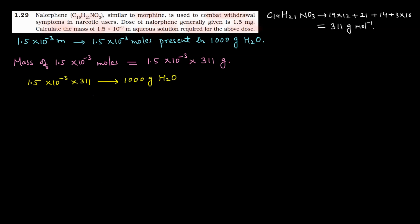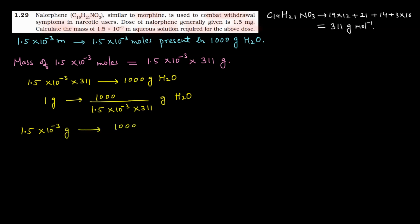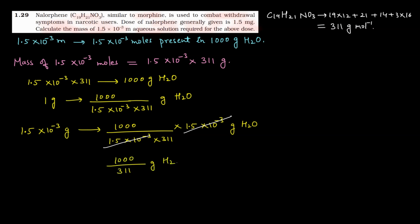So this mass — 1.5 × 10⁻³ × 311 grams — is present in 1000 grams of water, i.e., that much solvent. So 1 gram is present in 1000 ÷ (1.5 × 10⁻³ × 311) grams of water. We need 1.5 mg, i.e., 1.5 × 10⁻³ grams, so we multiply: the 1.5 × 10⁻³ terms cancel, leaving 1000 ÷ 311 grams of solvent.